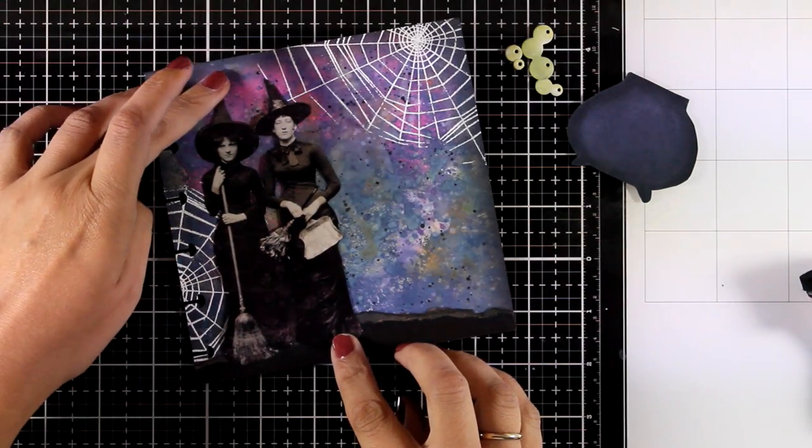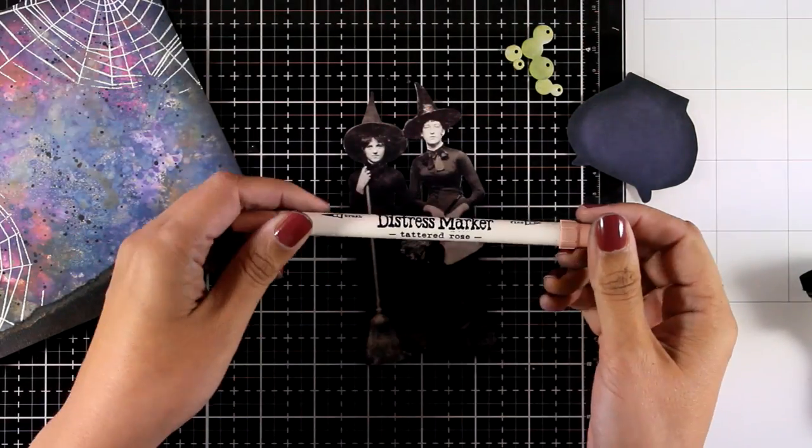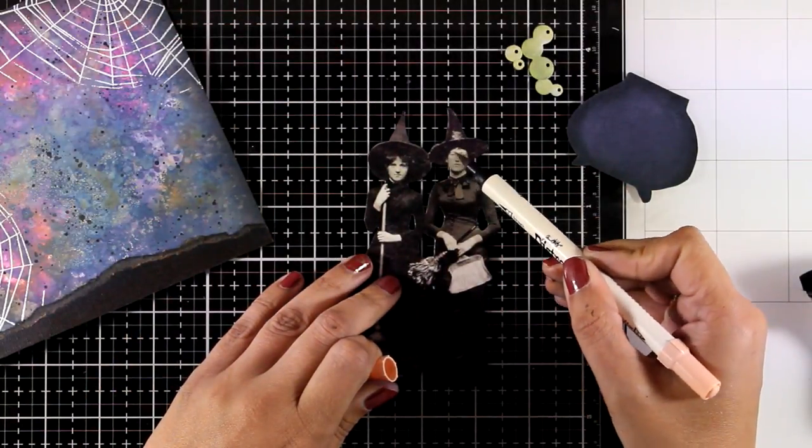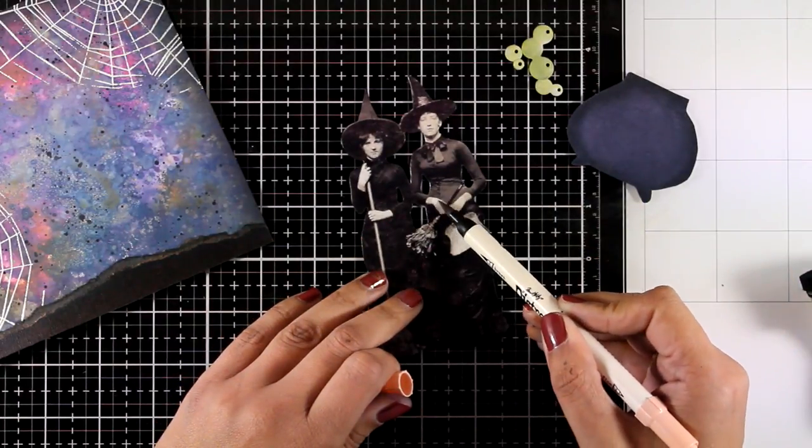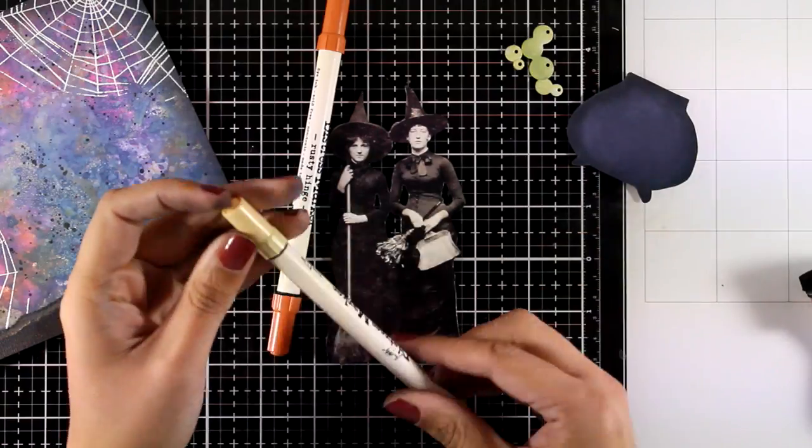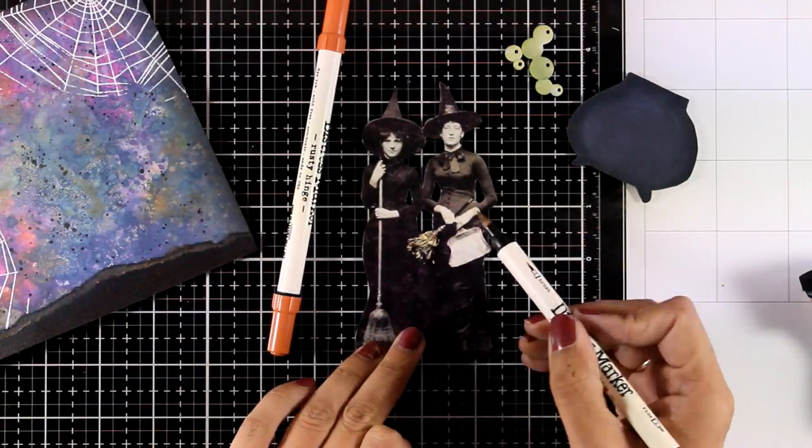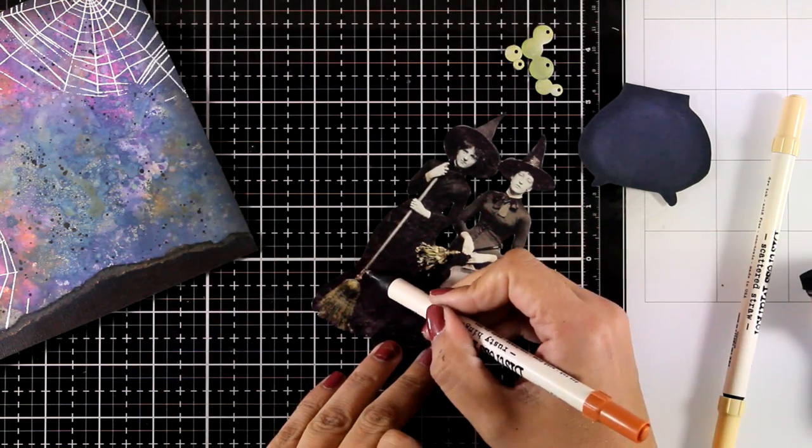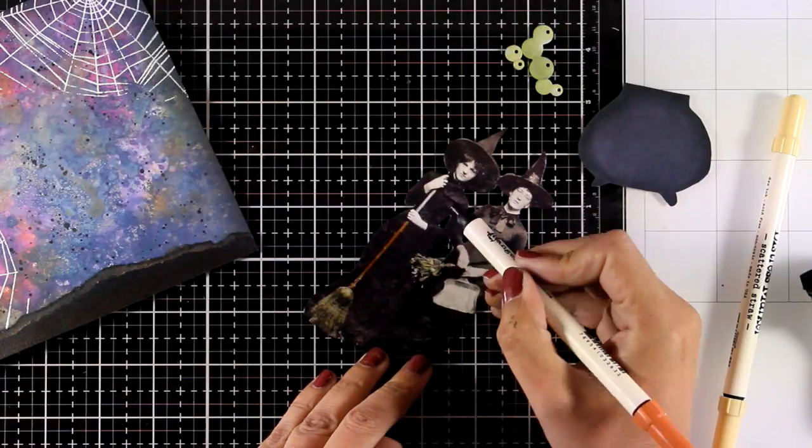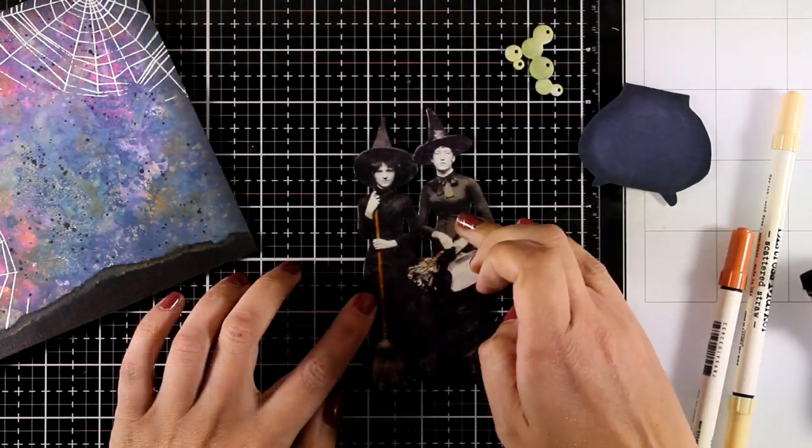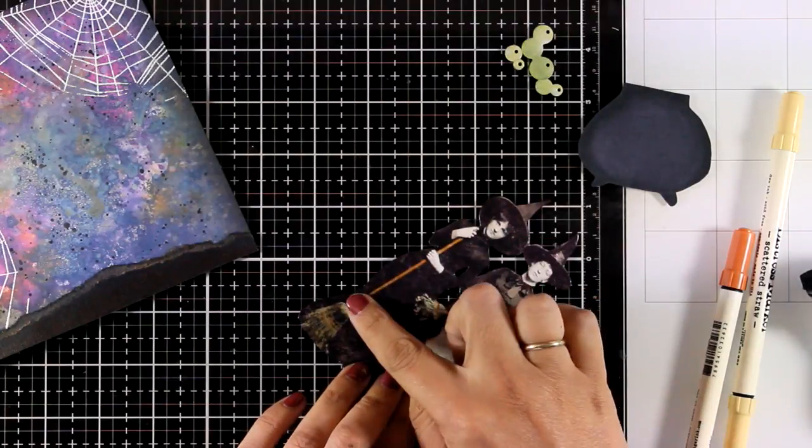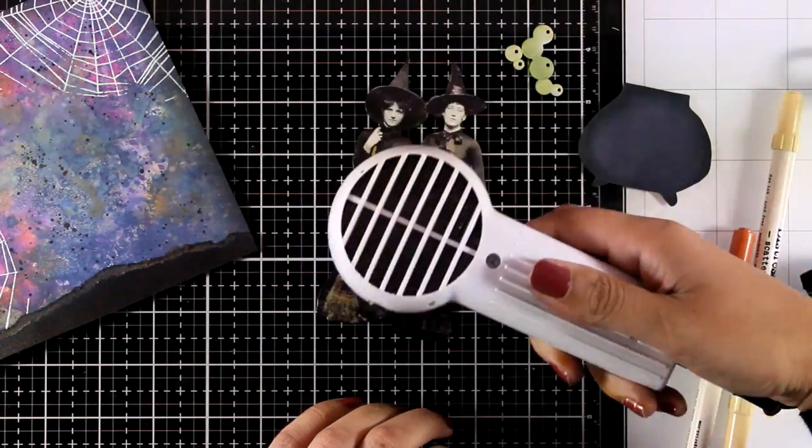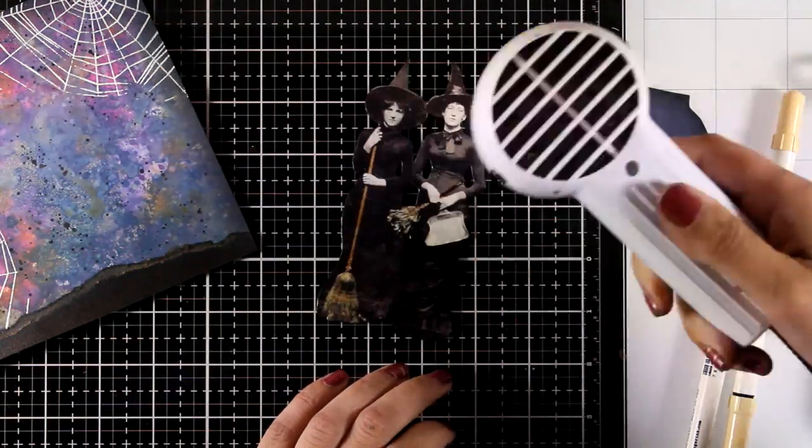So here I'm going to decide where everything is going to go. And I'm going to tint them slightly. So I will use some distress markers here to add some color on their faces and their hands. And that was Tattered Rose. Now I switch to Scattered Straw. And I will add some color on the brooms. Now again this is great because it's only going to tint slightly the photos. And it's not going to cover up the details. I'm using my fingers to go over the colored areas just to make sure that they are not as bright. And I'm also going to use my heat gun to make sure that this is completely dry.